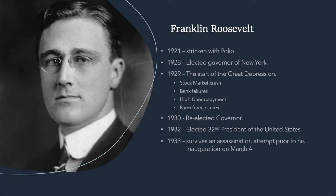In 1921 Roosevelt was stricken with polio and it crippled him. He remained unable to walk without assistance for the rest of his life. In 1928 he was elected governor of New York, and the following year the Great Depression began. There was the 1929 stock market crash in October, followed by bank failures, record high unemployment as much as 25 percent, and also many farm and even home foreclosures. In 1930 he was re-elected as the Democratic governor of the state of New York.